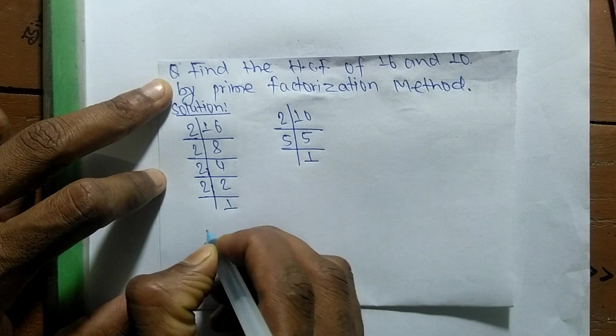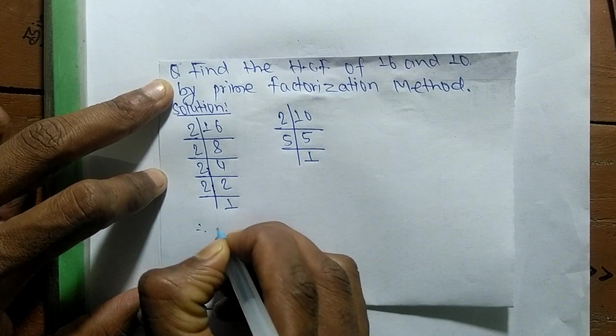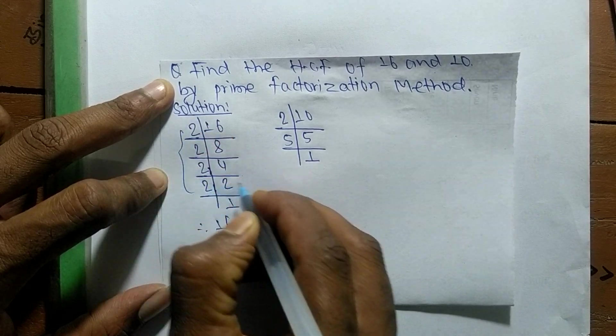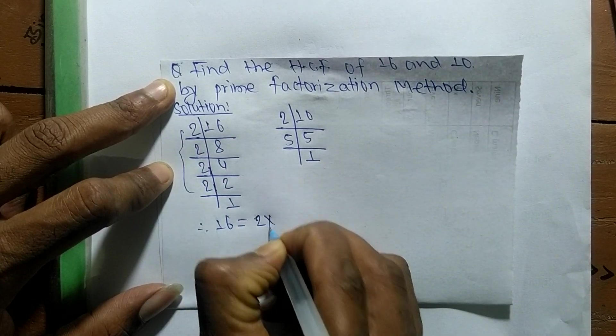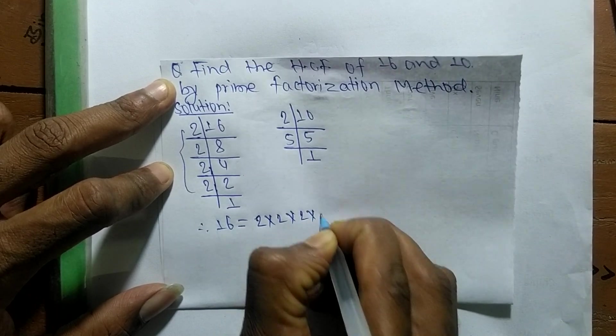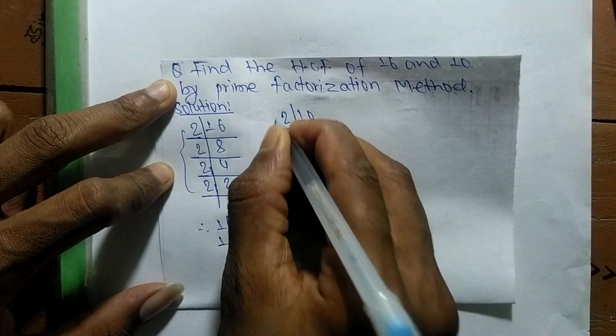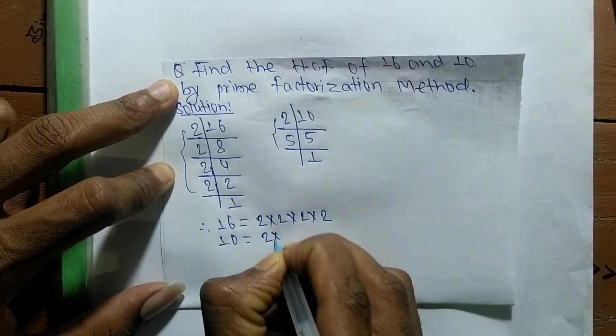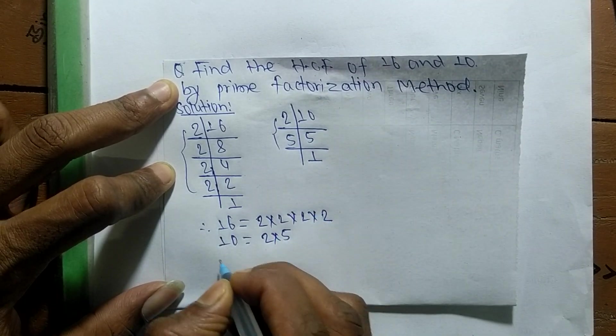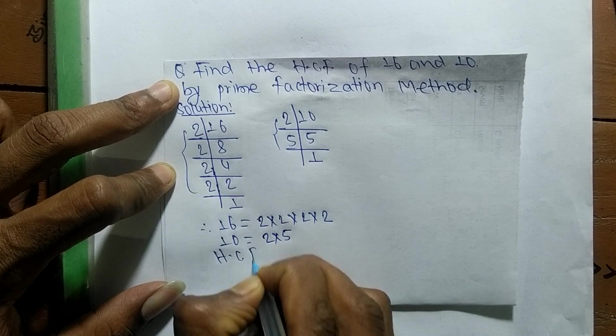Now from these prime factors we can write 16 equals 2 times 2 times 2 times 2, and likewise 10 equals 2 times 5.